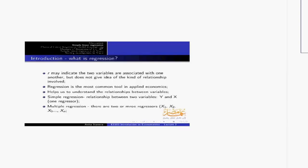We call it simple regression when we examine the relationship between two variables Y and X with only one regressor, only one X. We call it multiple regression when there are two or more regressors — X1, X2, Xn. Today we're going to focus mainly on the simple linear regression model, and from the next class we'll start introducing more X variables into the regression analysis.